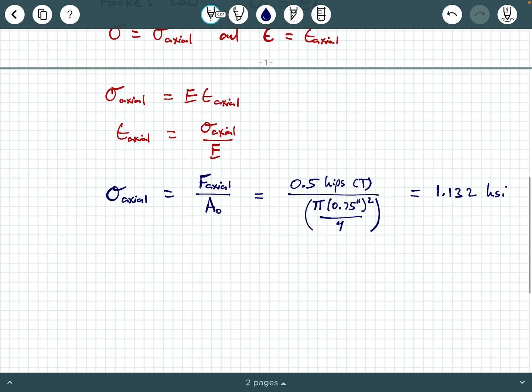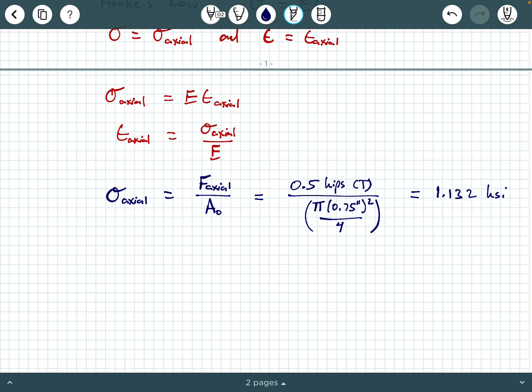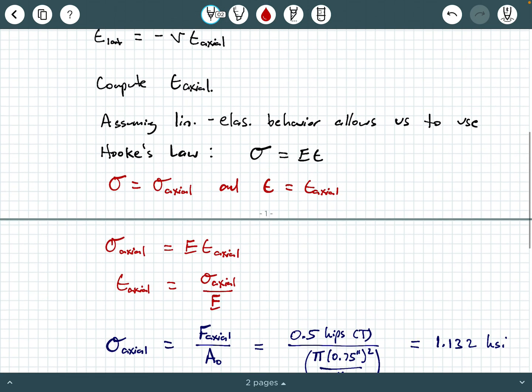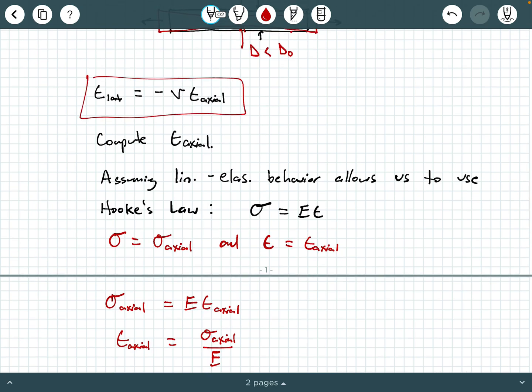Now I can enter into my epsilon axial equation. Epsilon axial is going to be 1.132 ksi divided by 10,000 ksi. That's just 0.0001132. It's a strain, so it's unitless. Notice that ksi over ksi cancels.